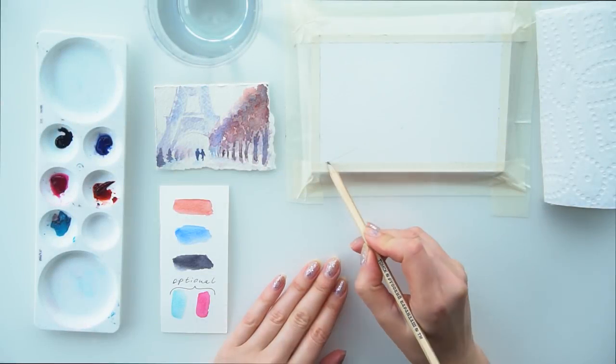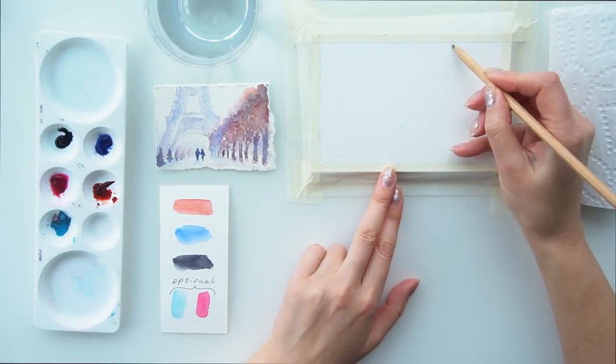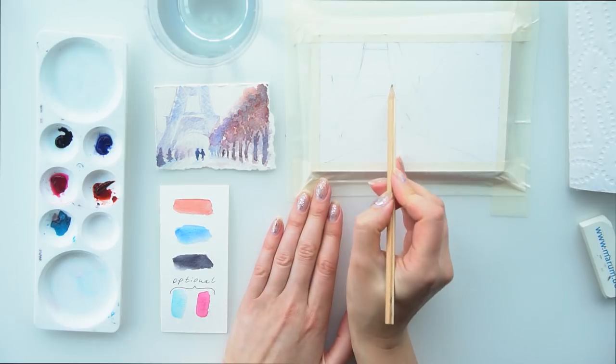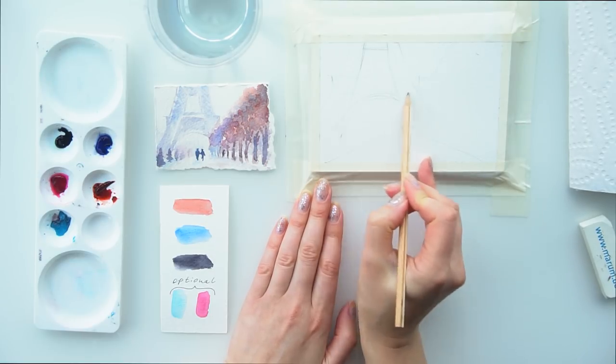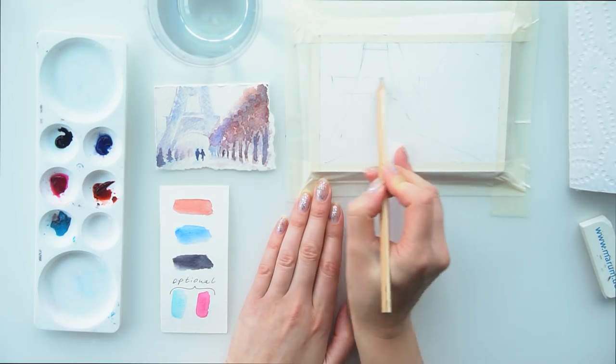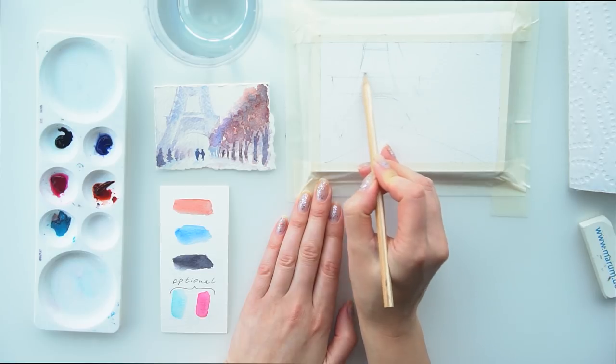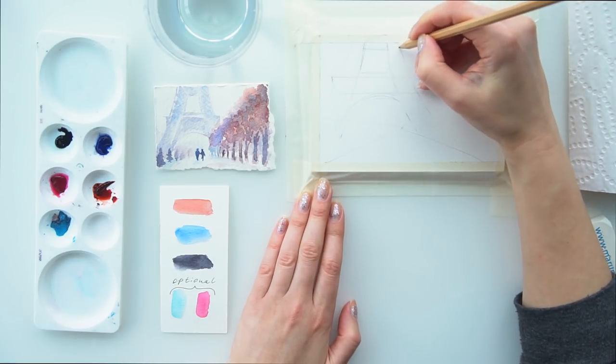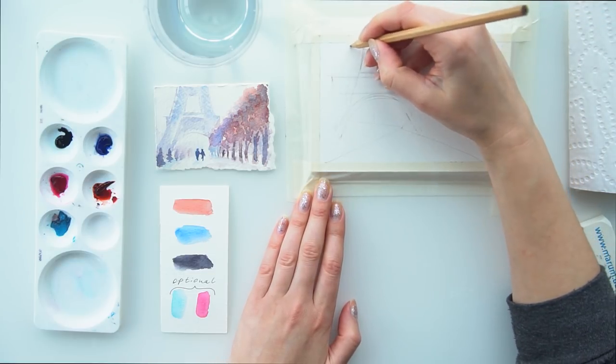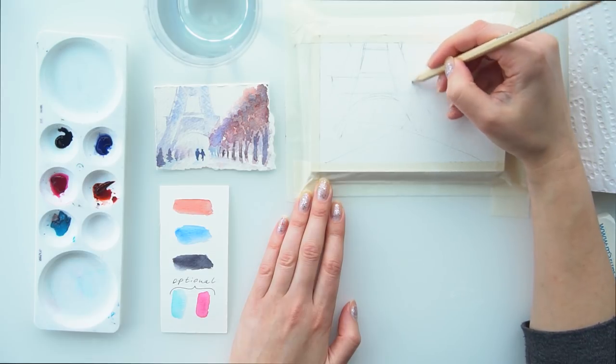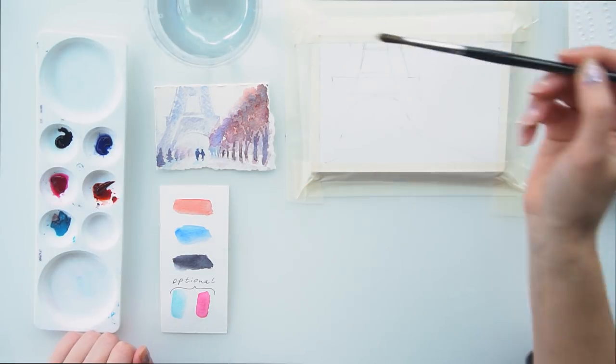I'm going to start with a pencil sketch. Following perspective rules, I will mark the position of my trees and will schematically draw the Eiffel Tower. You don't have to make a lot of details, just outlines.